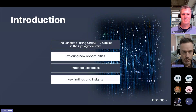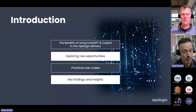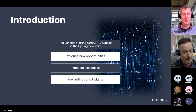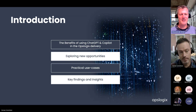At OpsLogix, we actually use ChatGPT and Copilot in our daily work. We use it both in terms of documentation and sometimes for troubleshooting. We actually use it quite a lot already — ChatGPT and, more recently, Copilot. Not so much in the XML code yet, but definitely in the C# modules we write for our management packs.